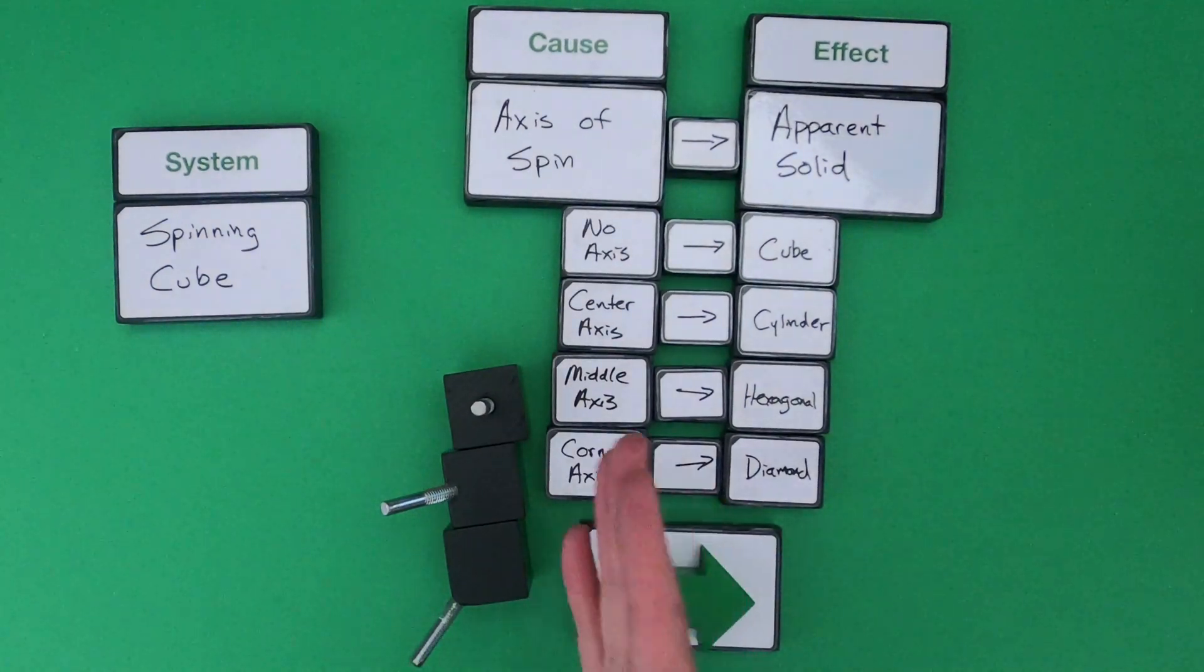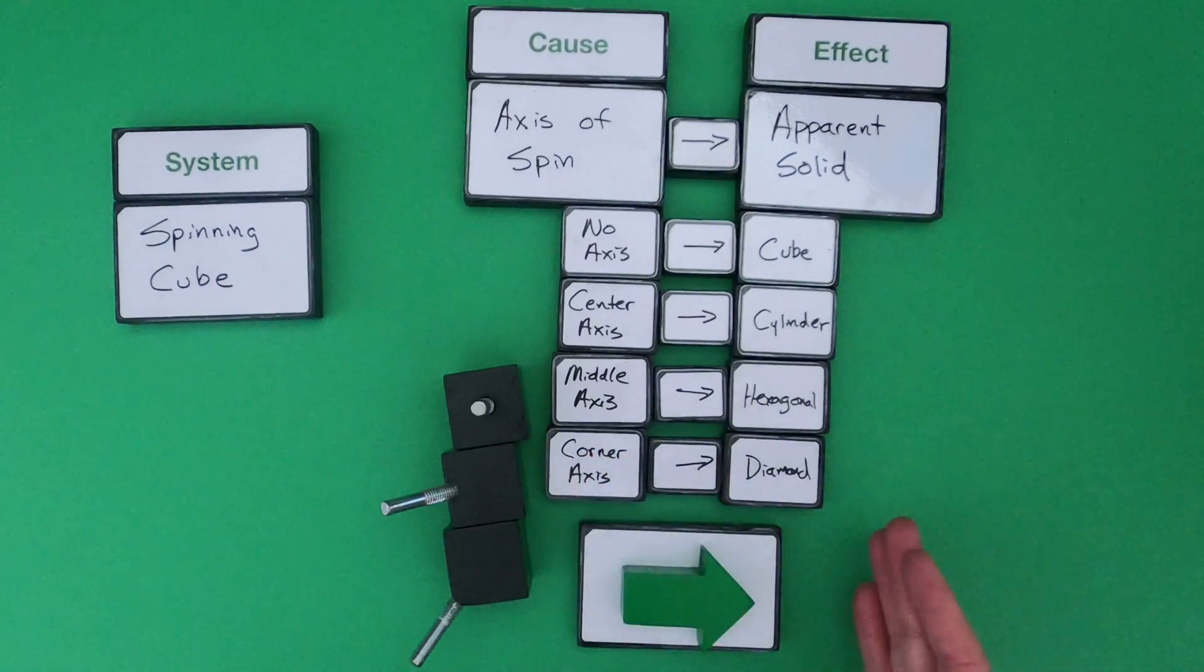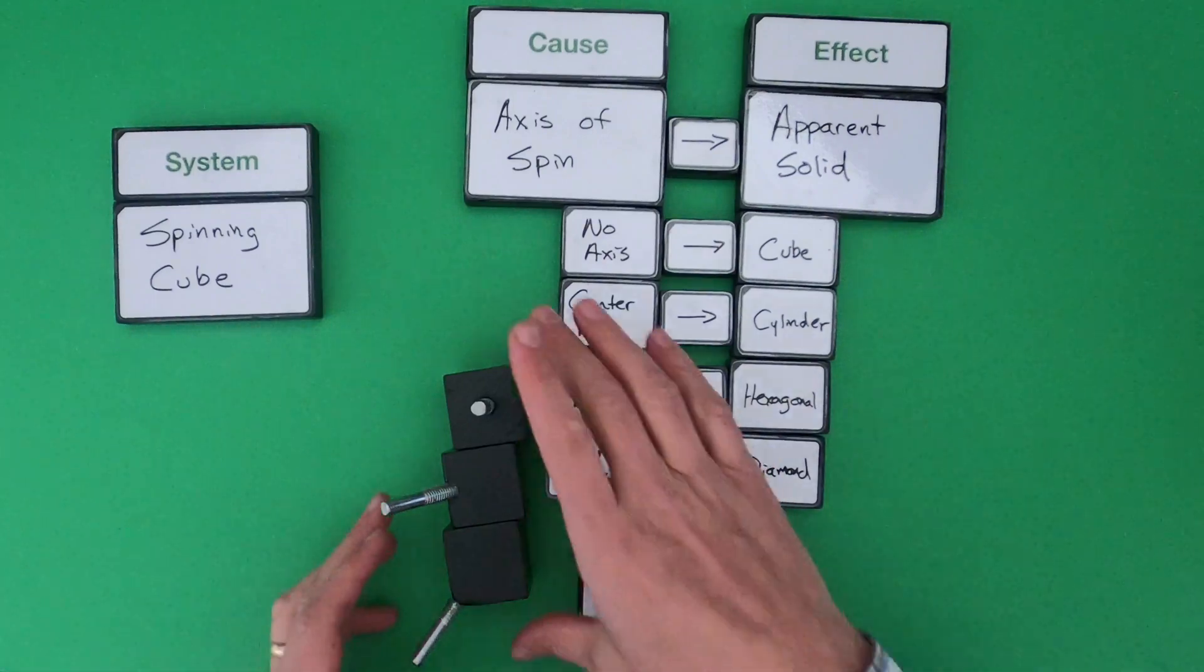What is that relationship between the axis of spin and the apparent solid? I'm going to clean these out of the way and then set up the next one for you to try on your own.